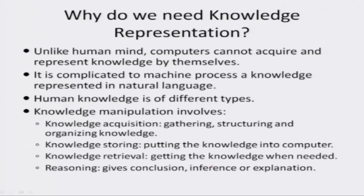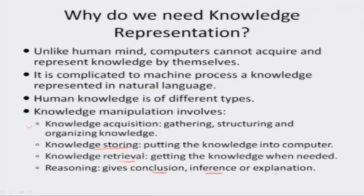Knowledge manipulation involves the following activities. First, knowledge acquisition: the process of gathering, structuring and organizing knowledge of a particular topic or domain, in order to prepare it to be put into computer memory. Knowledge storing is the process of putting knowledge into the computer in a suitably encoded format. Knowledge retrieval is the inverse process of getting knowledge back whenever it is needed. Reasoning is the most important part — it includes deriving new knowledge from existing knowledge by means of an intelligent program. The newly derived knowledge is known as a conclusion, inference or explanation.